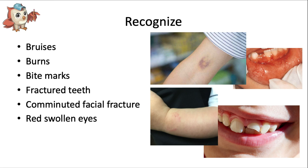First: recognize. Dentists are at an advantage when identifying abuse, especially in children, since most characteristic signs can be visualized in the head and neck regions. Common signs include bruises, burns, bite marks, fractured teeth, comminuted facial fractures, red swollen eyes, and multiple untreated injuries.